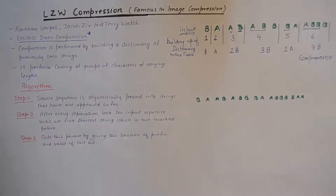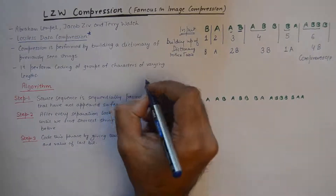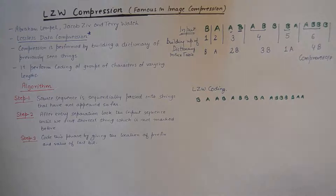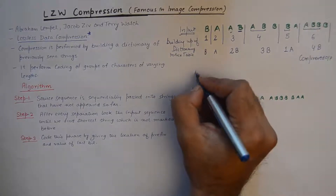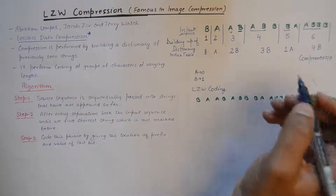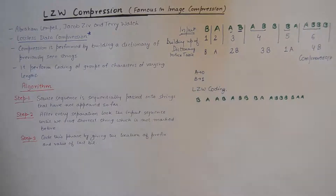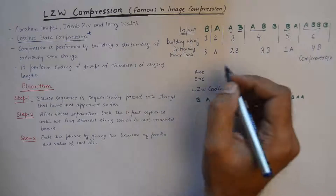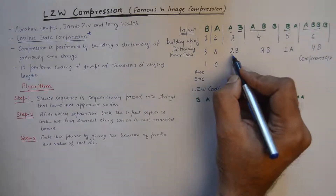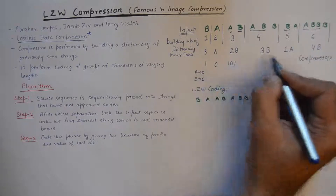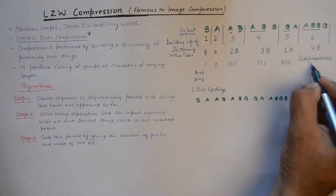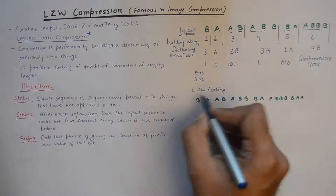There are ways to convert this compressed output into a code known as LZW coding. If we assign A as 0 and B as 1, we talk about the binary number system. In this case only two characters are present, so we assign 0 and 1. If there were three characters we could use 00, 01, 10, etc. So B is written as 1, A as 0; the binary equivalent of 2 is 10, and B is 1; 3 is 11, B is 1; 1 is 01, A is 0; 4 is 100, and B is 1. This becomes LZW coding.